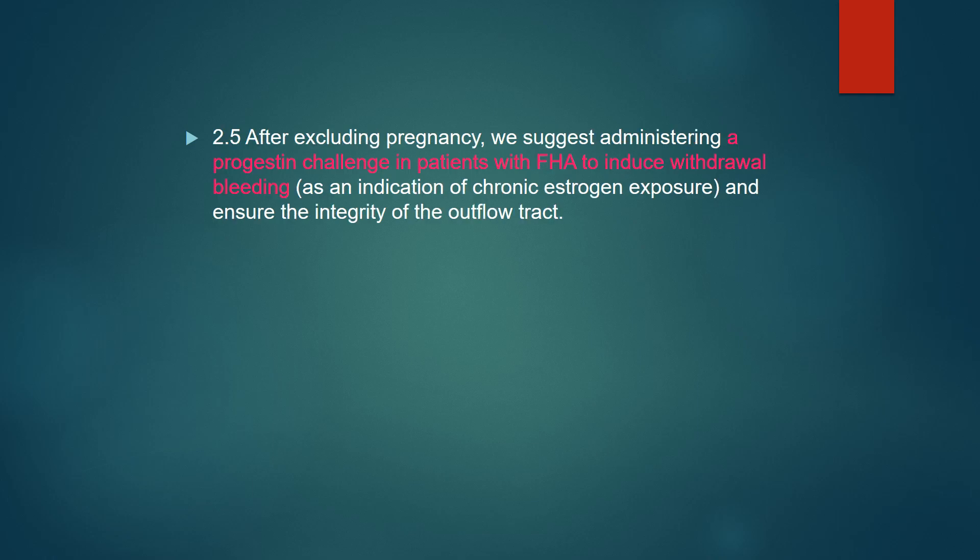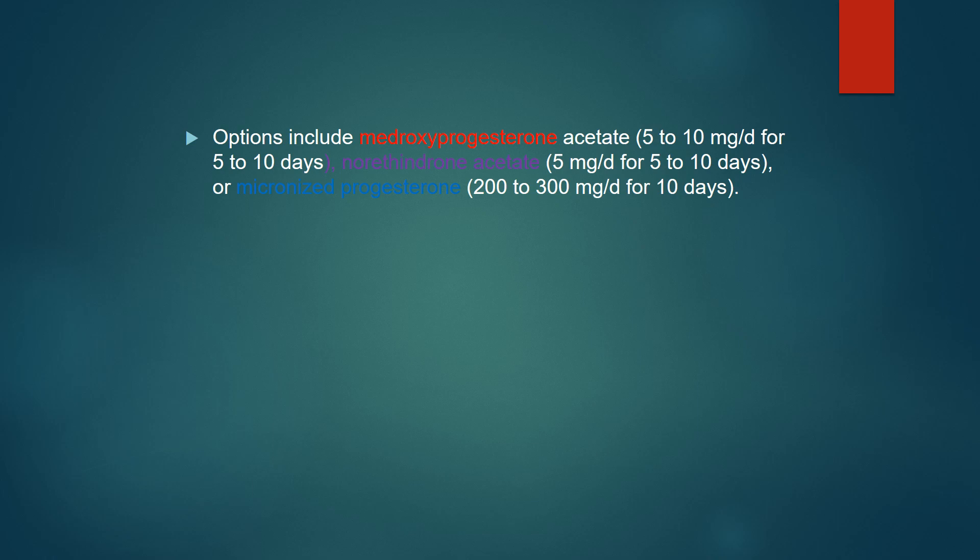After excluding pregnancy, it is suggested to administer a progesterone challenge in patients with FHA to induce withdrawal bleeding as an indication of chronic estrogen exposure and to ensure the integrity of the outflow tract. Options include medroxyprogesterone acetate and norethindrone acetate.